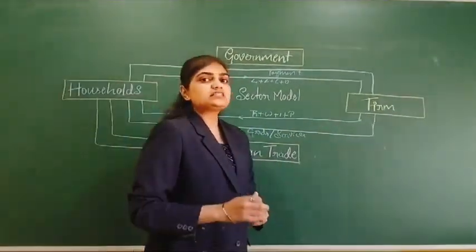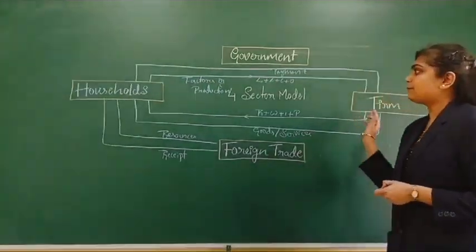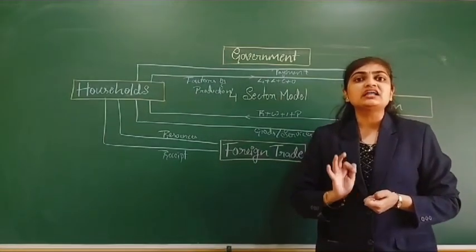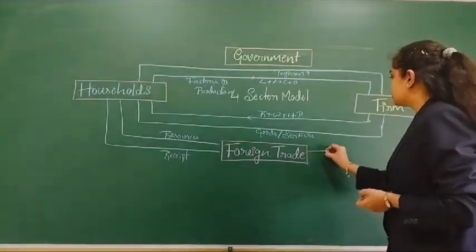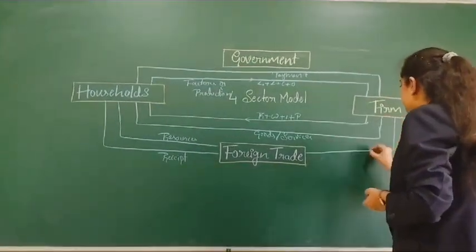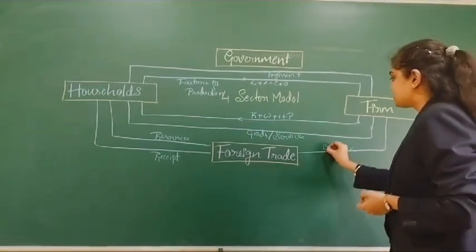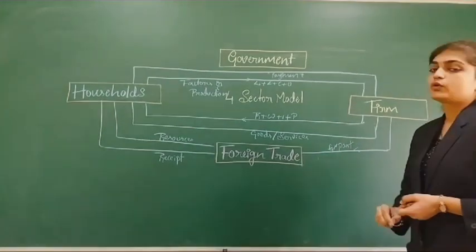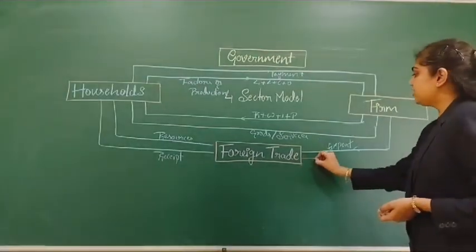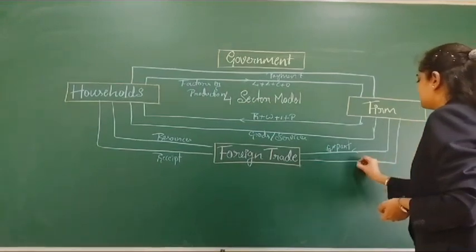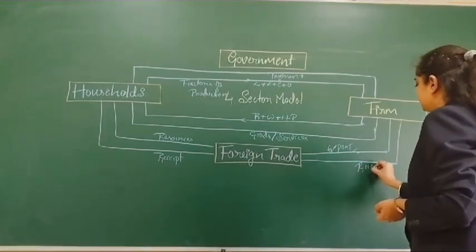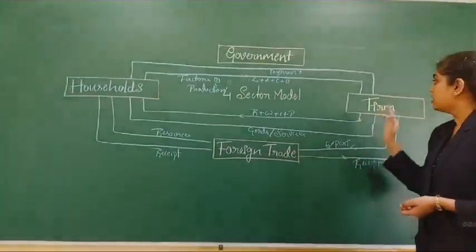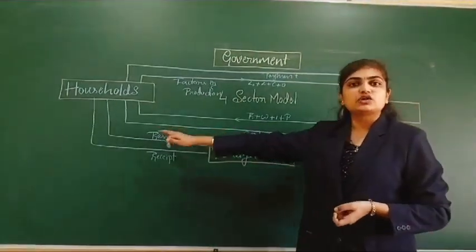Once firms produce goods or services, they supply them to customers in India. If there are additional goods or services remaining, those are sent to foreign countries — that we can see as exports. For the export of goods or services, in return they will get a receipt. By this, the relationship between firm, foreign trade, and household is established.